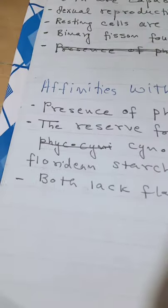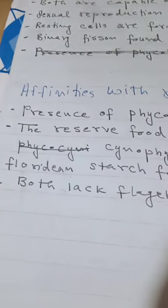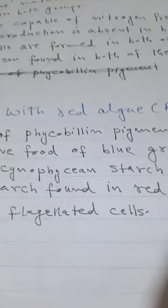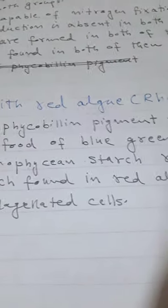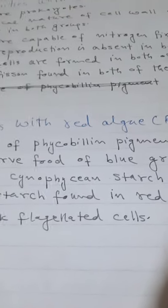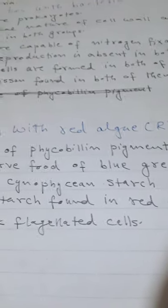The reserve food of cyanobacteria (blue-green algae) is cyanophysin starch, which resembles floridean starch formed in red algae. So the reserve food of both is similar. In addition, both lack flagellated cells — flagellated cells are absent in cyanobacteria as well as in red algae.